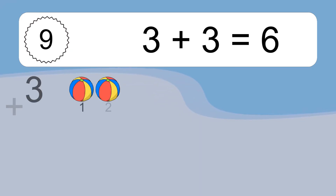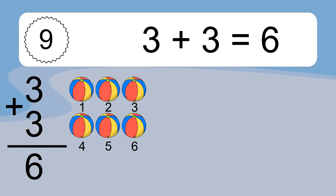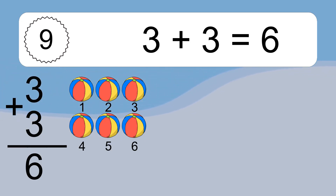3 plus 3 equals what? 3 plus 3 equals 6. Let's count it: 1, 2, 3, 4, 5, 6.